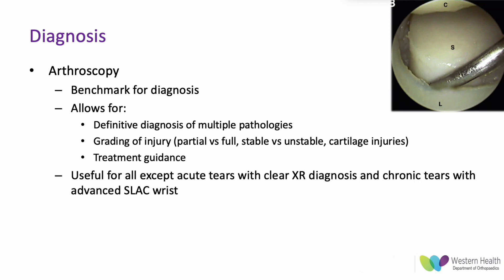The gold standard for diagnosis is arthroscopy. It allows definitive diagnosis of multiple pathologies, especially partial tears, and enables grading — partial versus full thickness and stable versus unstable — as well as assessment of cartilage injuries to guide treatment. The picture shows a probe being driven between the scaphoid and lunate. Arthroscopy is useful in all cases except where there is a clear x-ray diagnosis or chronic tears with advanced SLAC wrist where the treatment algorithm is already determined.